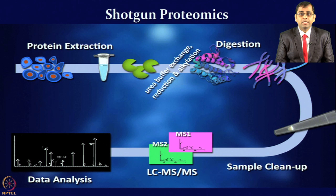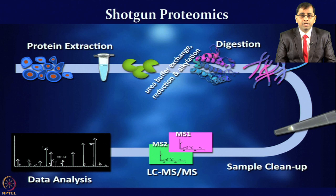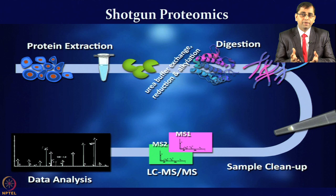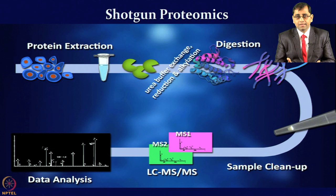The field of shotgun proteomics is driven by mass spectrometry. You make lysates from complex protein samples, digest them using an enzyme like trypsin through reduction, alkylation, and digestion, followed by peptide cleanup. From the complex proteins you now have peptides which can be separated and analyzed by MS or MS/MS, providing peptide sequences and protein identification using different database searches.